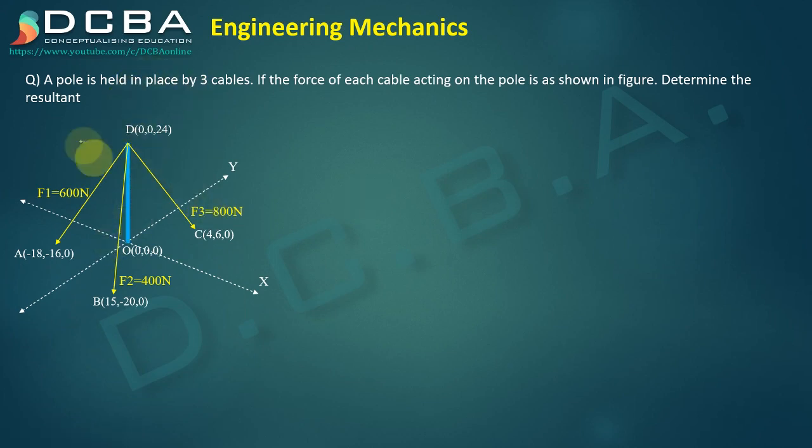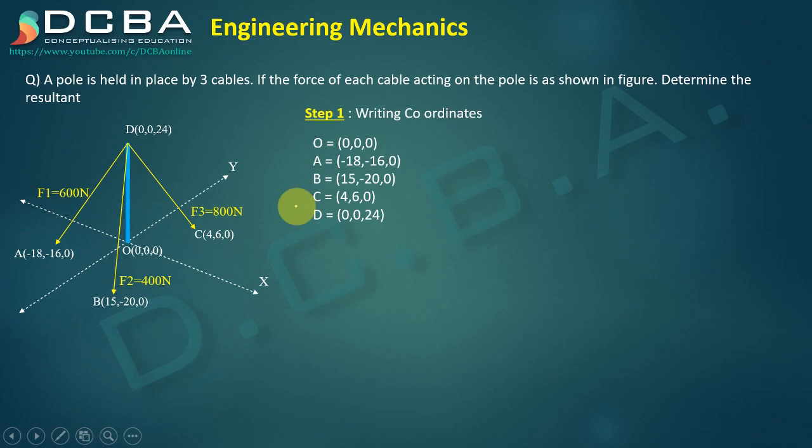In this problem the coordinates are already given, but in many problems the coordinates are not directly given. So step one, whether the coordinates are given or not, should always be writing the coordinates. We have the origin which is 0,0,0, then we have A, B, C, and D. So here we have five coordinates.